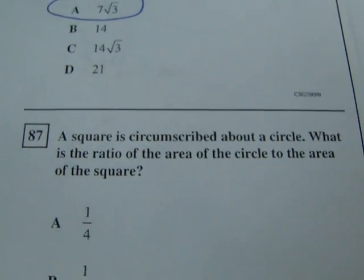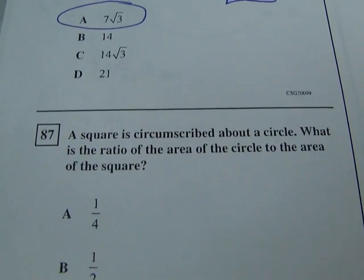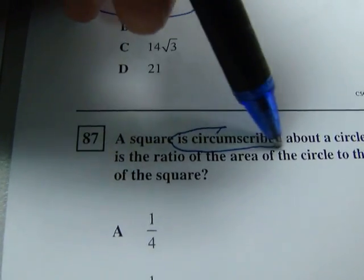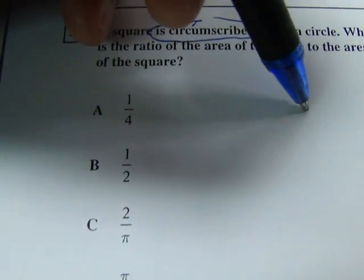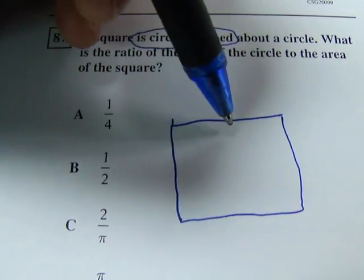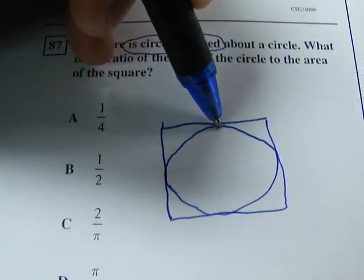It says a square is circumscribed about a circle. What is the ratio of the area of the circle to the area of the square? Okay, so the square is circumscribed. So remember, there's inscribed and circumscribed. Circumscribed means on the outside. So that means the square will be on the outside. So the circle will be on the inside. So instead of just giving you the answer, I'm going to kind of prove this.